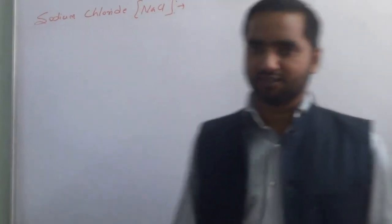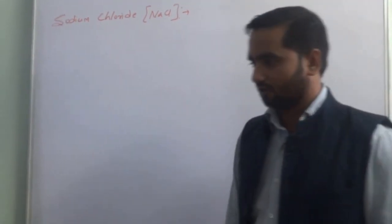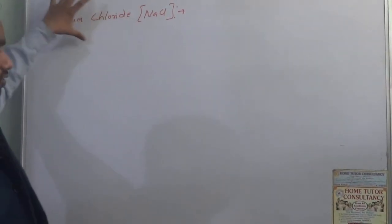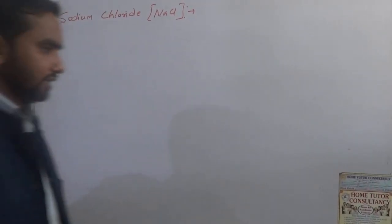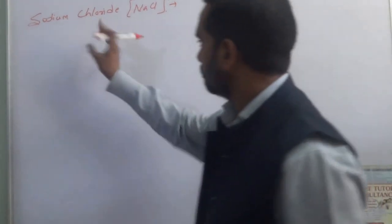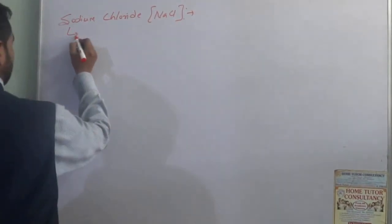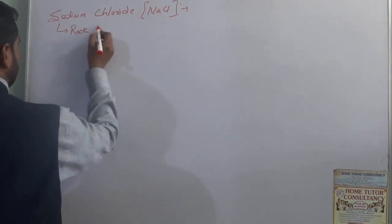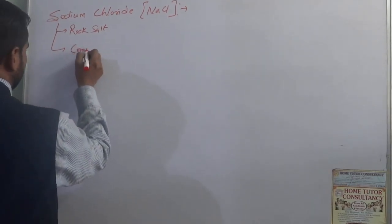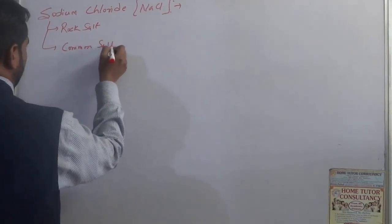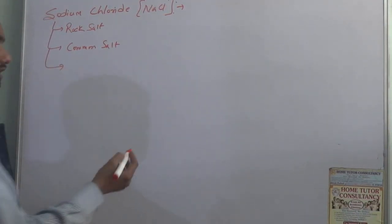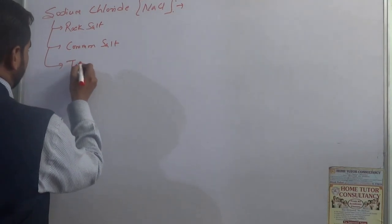My dear friends, today we are going to discuss about common salt, also called sodium chloride or NaCl. This is the most common salt found in nature, occurring in the form of rock, so it is also called rock salt. It is also commonly called table salt because it is used in day-to-day work.